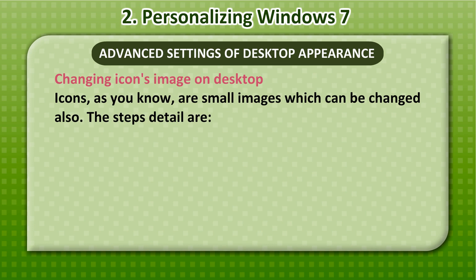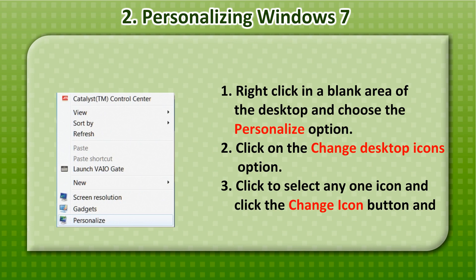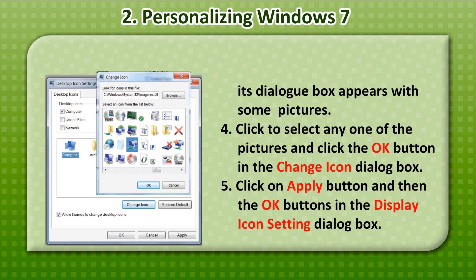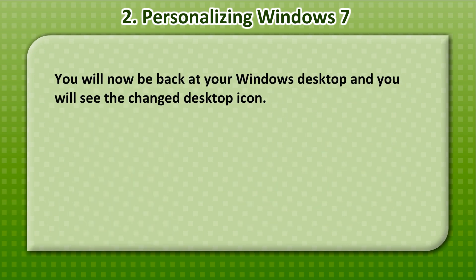Changing icons image on desktop: Icons, as you know, are small images which can be changed. The steps are: 1. Right-click in a blank area of desktop and choose the Personalize option. 2. Click on the Change Desktop icon option. 3. Click to select any one icon and click the Change icon button; a dialog box appears with some pictures. 4. Click to select any one of the pictures and click the OK button. 5. Click Apply button and then OK button. You will now see the changed desktop icon.